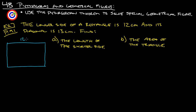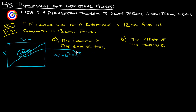The longer side of a rectangle is 12 centimeters, and its diagonal is 13 centimeters. We know that's a right angle, so we can use a squared plus b squared equals c squared. The diagonal has to go in for the hypotenuse — so 13 squared — and then we say 12 squared plus x squared equals 13 squared.